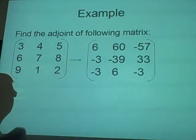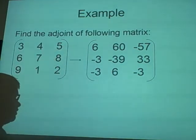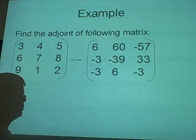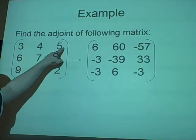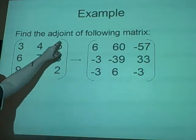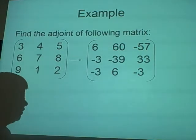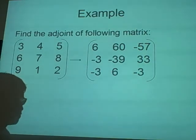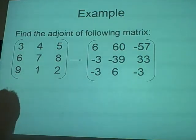The next one: we cross off here and here, giving 32 minus 35 = 3, but it's minus 3. It's a positive position, so we leave it as minus 3. The next one: we cross off here and here — 24 minus 30 = minus 6, but because it's a negative position, we now have plus 6. Then the final one: 21 minus 24 = minus 3. So this is the adjoint matrix, and it's not that hard really — quite similar to calculating the determinant in that we're crossing lines and finding the determinant of what's left.